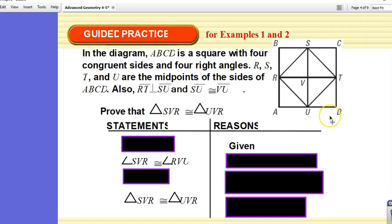In the diagram, ABCD is a square with four congruent sides and four right angles. R, S, T, and U are the midpoints of the sides of ABCD. Also, RT is perpendicular to SU, and SU is congruent to VU. Alright. That's a lot of information.